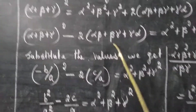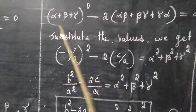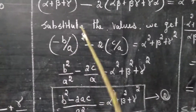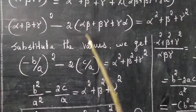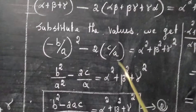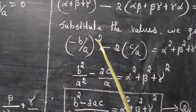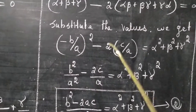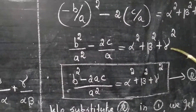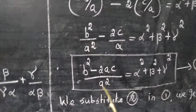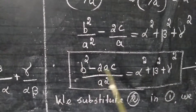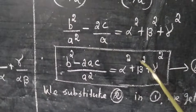Now these values we know already, so we substitute: alpha plus beta plus gamma is minus B by A, so we get minus B by A whole squared, minus 2 times alpha beta plus beta gamma plus gamma alpha, whose value is C by A. So we substitute C by A here. Finding the square gives B square by A square minus 2C by A. Taking LCM as A square, this becomes B square minus 2AC all divided by A square, which equals alpha square plus beta square plus gamma square.